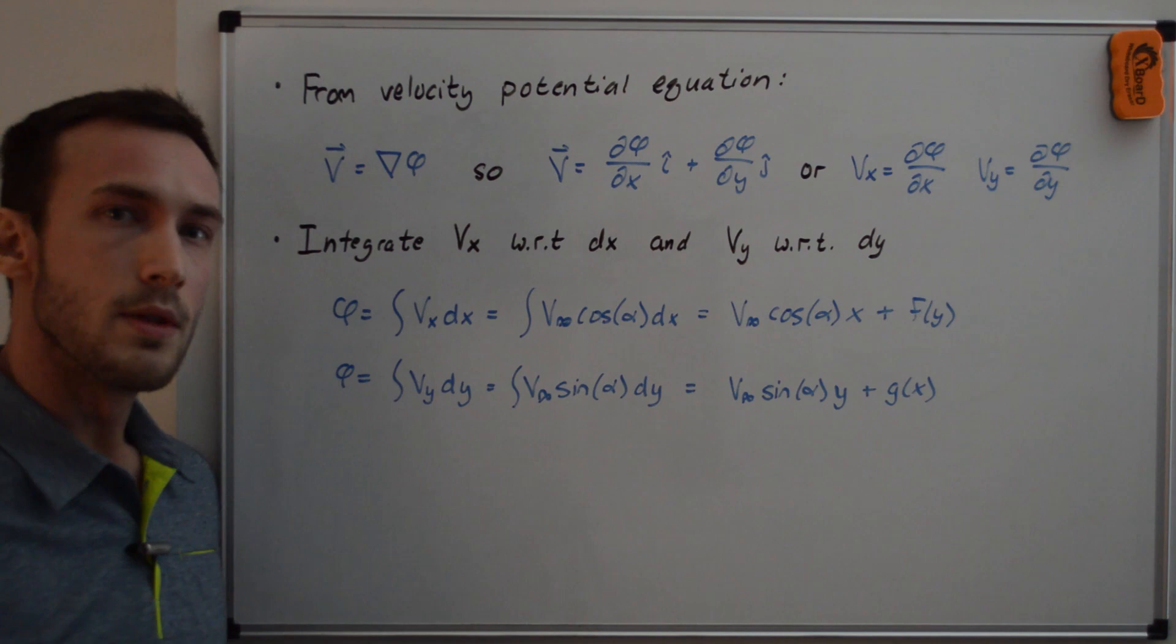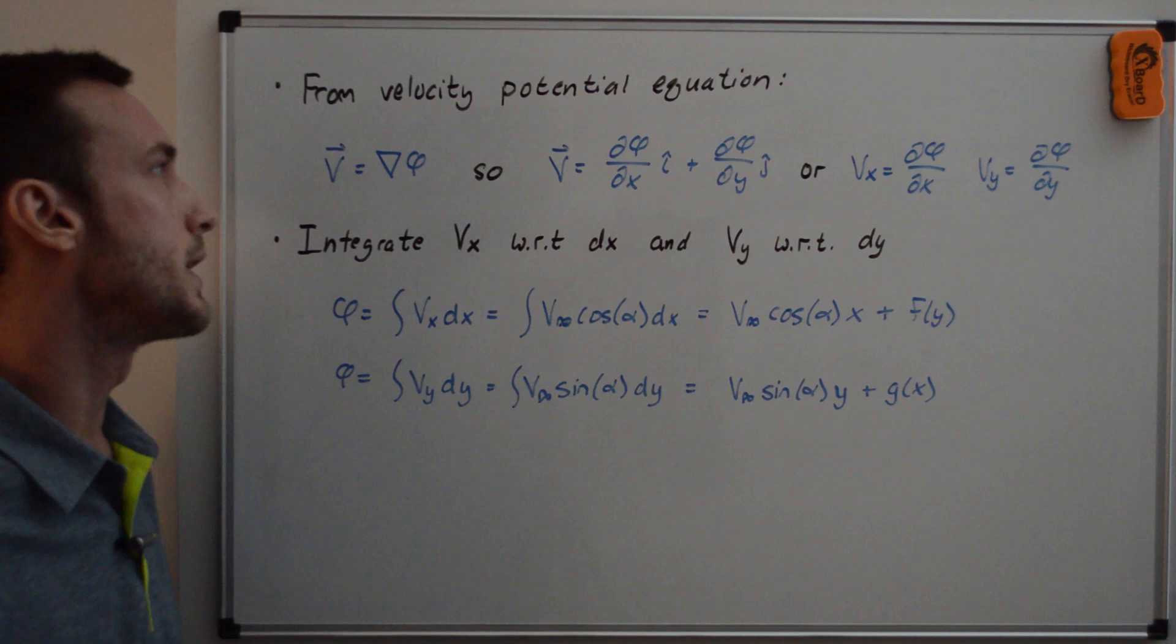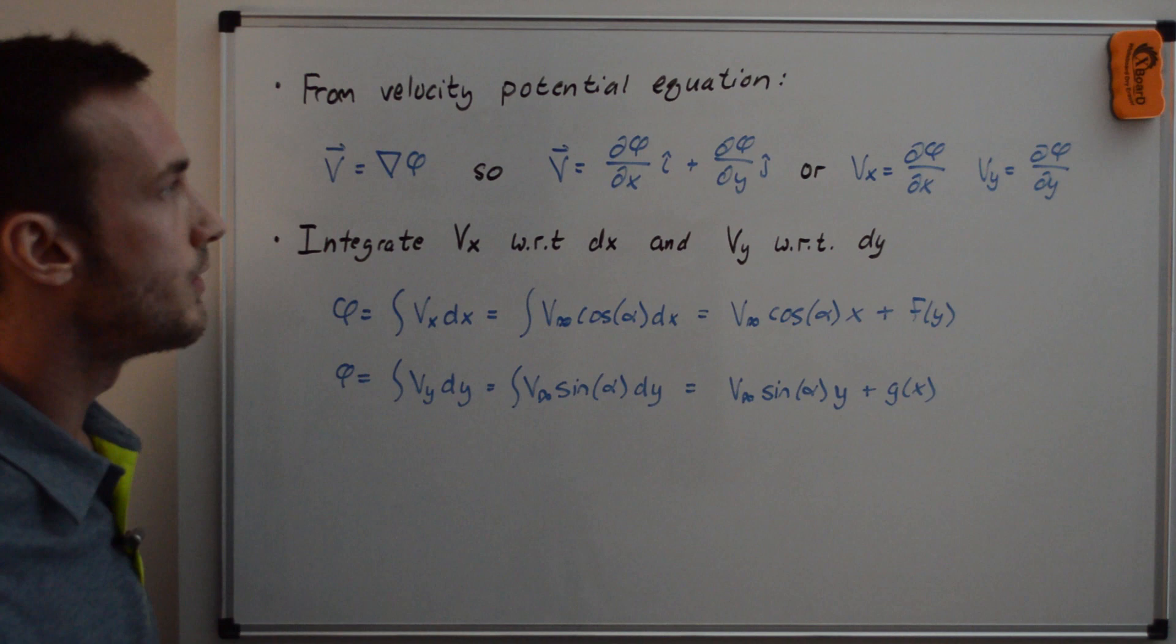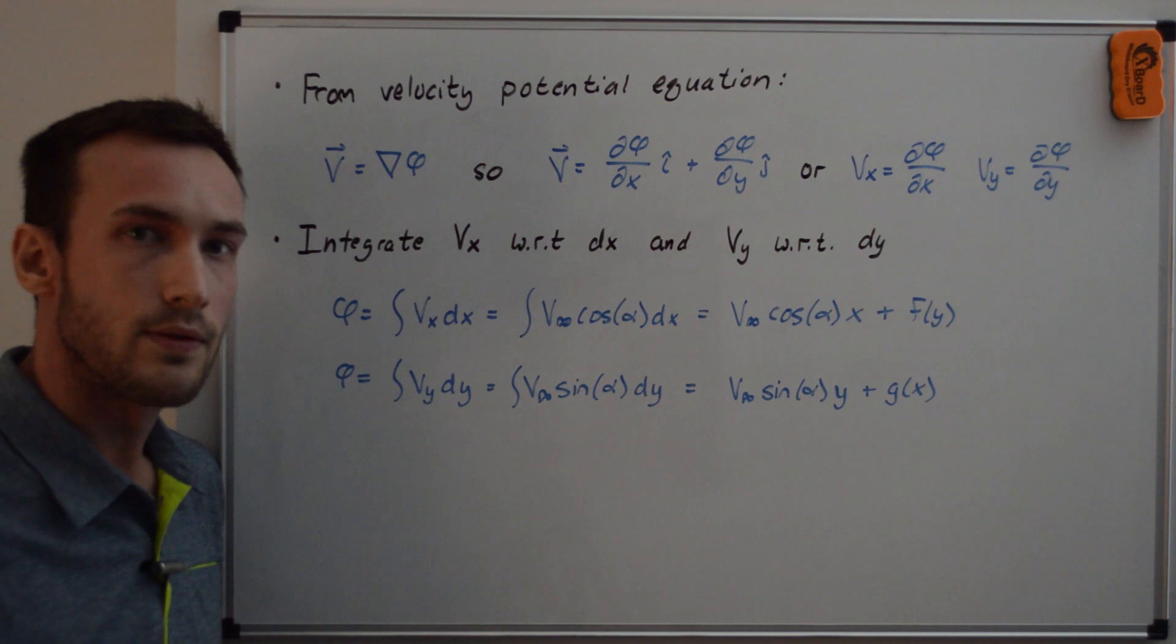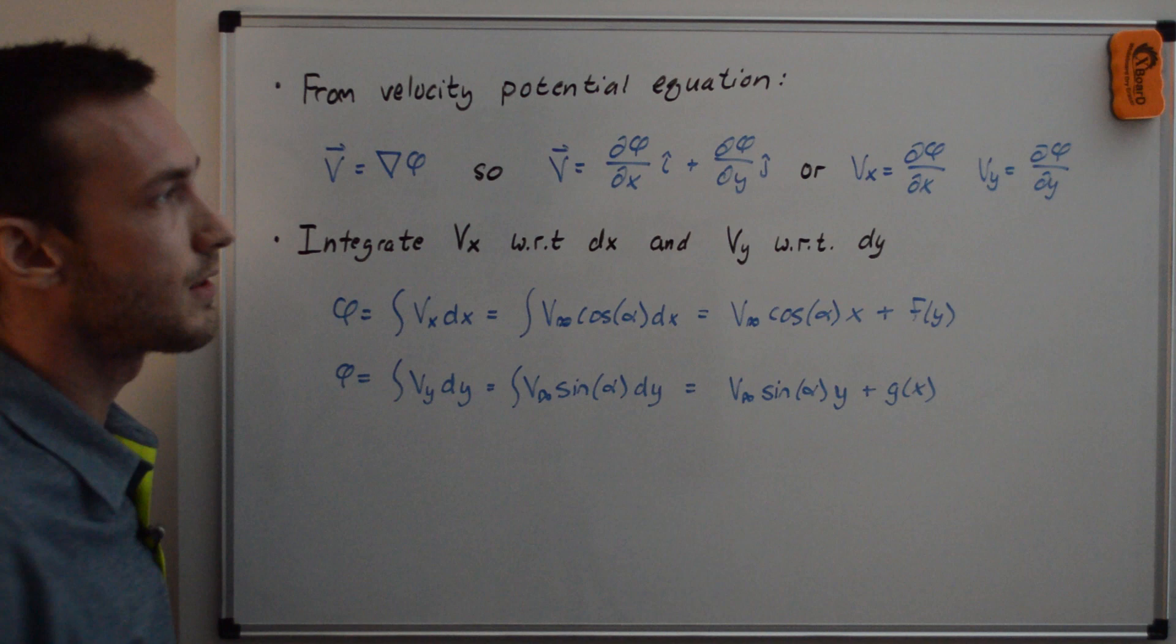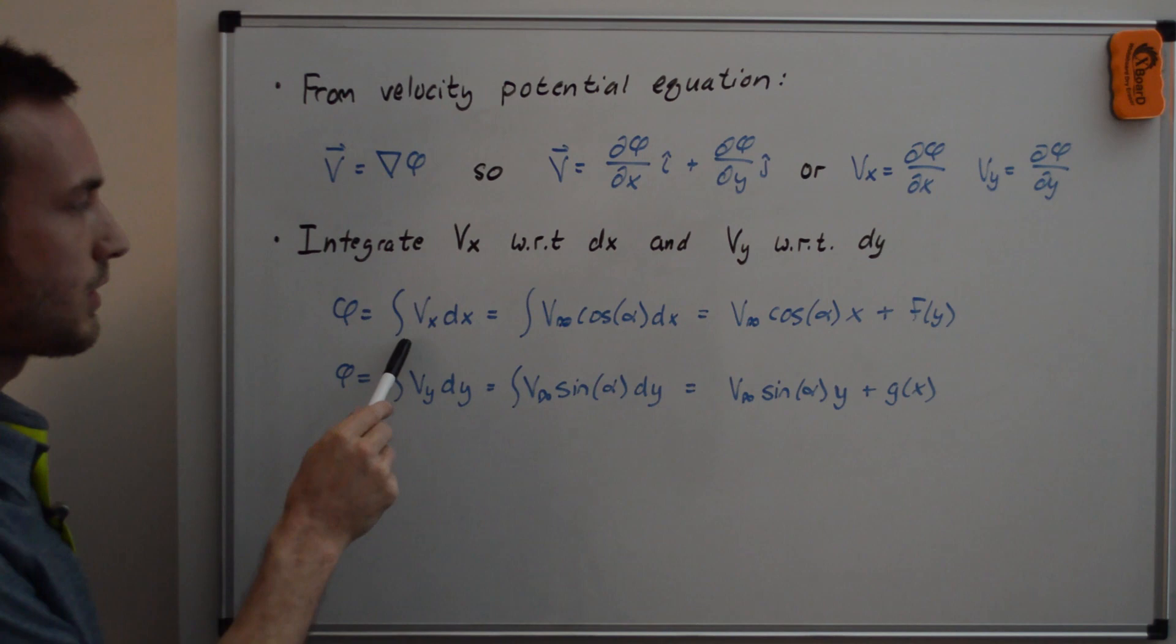So from the velocity potential equation, we have v is equal to del phi, or the gradient of phi, which we can expand out as dphi dx in the i-hat direction, plus dphi dy in the j-hat direction. So vx is equal to dphi dx, or the y component here as vy is equal to dphi dy. And we're trying to find phi, so we're going to integrate vx with respect to dx and vy with respect to dy.